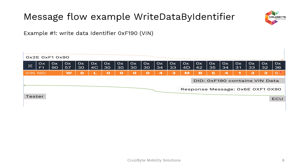There are other situations where you can write data for different reasons — for example, when replacing the injectors of an engine, the injector codes can be written into ECU memory. Or if you want to reset some NVM memory locations, you can write and reset the values using write data by identifier.